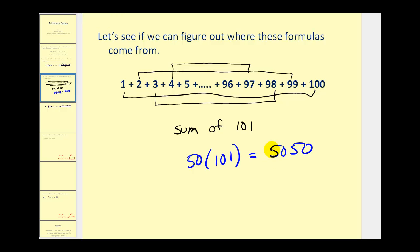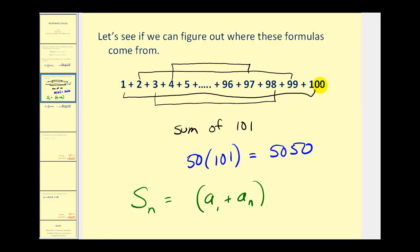Now if we look at this in the most general sense — meaning we want the sum of n number of terms — the sum we create by pairing the first and last term would be a sub one plus a sub n. And the number of pairs we would have would be the total number of terms, n, divided by two. This is one of the formulas we can use to find the partial sum of an arithmetic series.